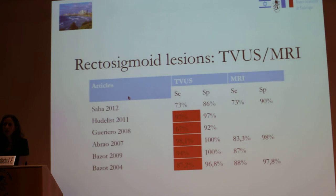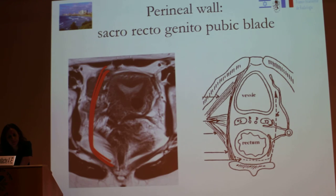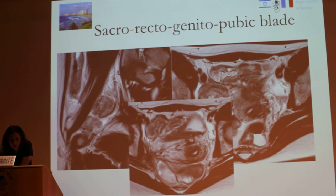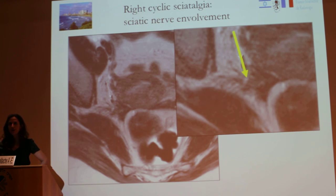We think that ultrasound for digestive lesions is quite superior for experienced operators. For certain locations, MRI is superior to ultrasound because you can see the sacro-recto-genital-pubic space, which is an important structure. You can see sciatic nerve involvement due to endometriosis, which you cannot diagnose with ultrasound alone. So MRI is very helpful, and both imaging modalities are complementary.